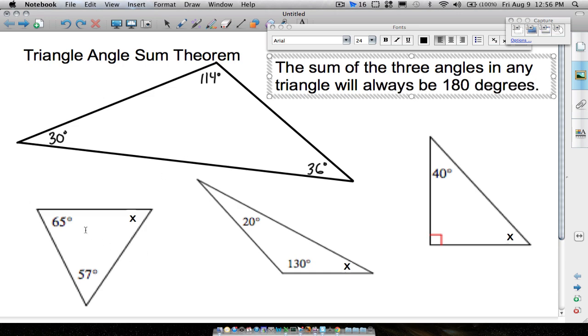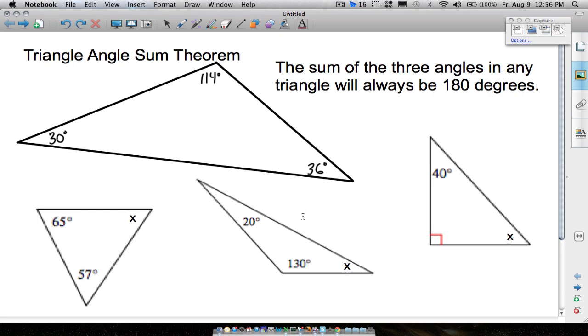With that in mind, these three examples down here, we're given two angles. We need to find the third angle. So what we can do, you can either add these two together and then subtract that number from 180, or you could take 180 minus 65 minus 57. It's entirely up to you how you want to do that.